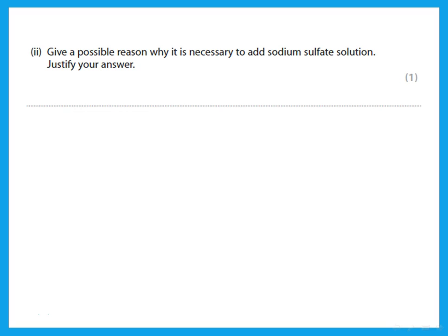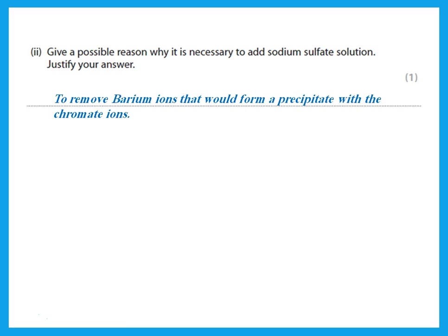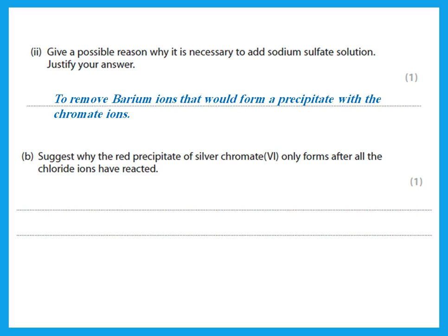Sodium sulfate is added to remove barium ions, because if barium ions remain, they would form a precipitate with chromate ions and interfere with the endpoint. The red precipitate of silver chromate only forms after all chloride ions have reacted because silver chloride is much less soluble than silver chromate — silver chloride precipitates first and silver chromate does not appear until all chloride has been consumed.